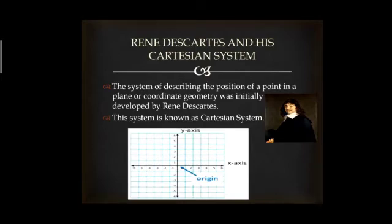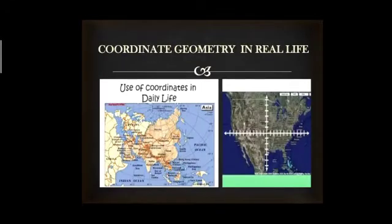This system is known as the Cartesian system, which consists of an x-axis and a y-axis intersecting at a point called origin. The Cartesian system, or coordinate geometry, is applied in real life to find out the exact location of a point or an object on a plane.